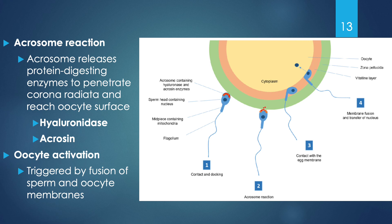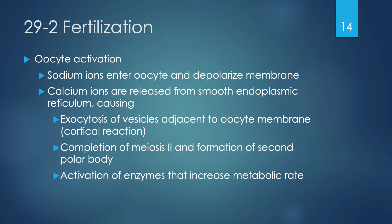Oocyte activation is triggered by the fusion of the sperm and oocyte membranes. Once fused, sodium ions rush into the oocyte and depolarize the membrane, causing calcium to be released from the smooth endoplasmic reticulum. This results in three distinct things: exocytosis (vesicles near the oocyte membrane expel their products), the end of meiosis II with formation of the second polar body, and activation of enzymes that rev up the metabolic rate.